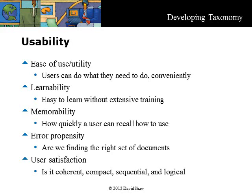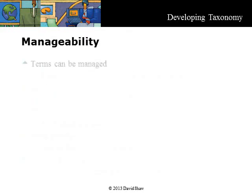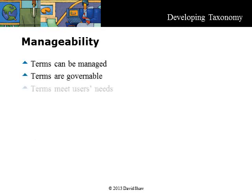The effectiveness of a system, and the effort a user must expend on using a taxonomy, are part of the art in designing a taxonomy, and even more so when we discuss metadata models. Manageability refers to objects that can be managed and are governable through a process. They are easily handled, worked and shaped, and can be contrived readily to meet the needs of users. One measure of manageability is whether the taxonomy tree was constructed easily. If it is difficult to construct, then it will be difficult to manage.